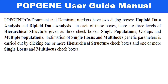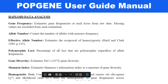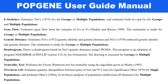The Popgene wizard guide for co-dominant and dominant markers has two dialog boxes: haploid data analysis and diploid data analysis. Each box has three levels of hierarchical structure as three checkboxes — single population, groups, and multiple populations. Estimation of single-locus and multi-locus genetic parameters is carried out by clicking the appropriate hierarchical structure. Data analysis will find parameters like gene frequency, allele number, effective allele number, polymorphic loci, gene diversity, Shannon index, homogeneity test, F statistics, gene flow, genetic distance, dendrogram, neutrality test, and two-locus LD.